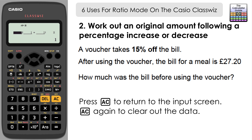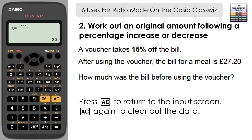If 15% is taken off, we're paying 85%, so £27.20 represents 85% of the original bill. We set up the ratio: 85 represents £27.20 on the left-hand side. On the right-hand side we want the original cost, which is 100%. Fill in 100, press equals, and the original bill was £32 before the voucher was applied.